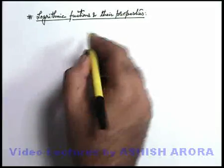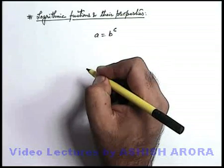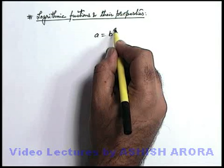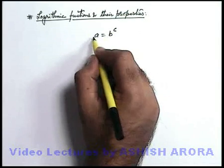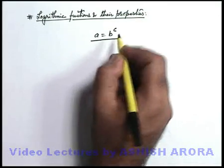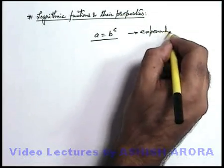Say if you are given with an equality like a is equal to b to power c. When we calculate the numerical value of b to power c, if b and c are two numbers we will get another number a. Now this form of equality we call exponential form.